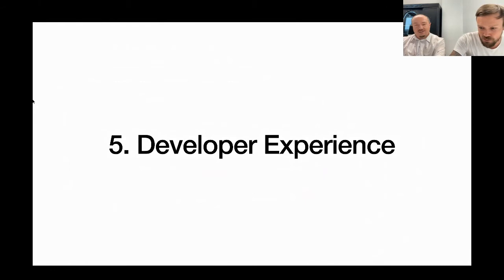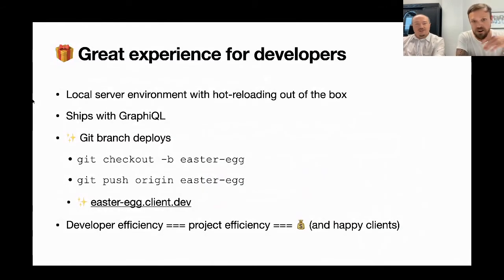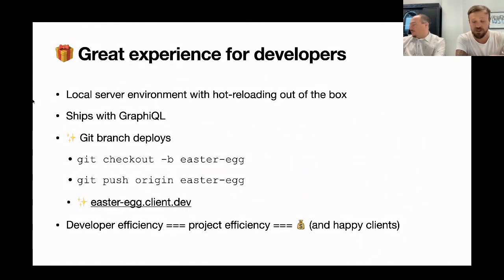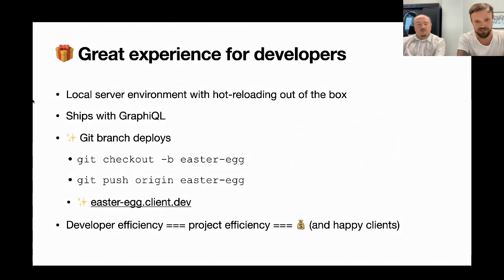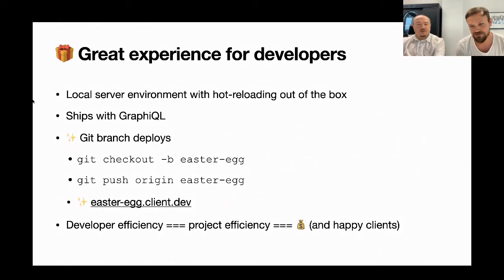Developer experience with Gatsby is great. Out of the box it gives you a local server environment with hot reloading — really simple, puts your website on port 8000. It ships with GraphQL, the interface that makes it easy to learn GraphQL and build your queries. Once you've built a query that works, you just copy it and put it into your code. Git branch deploys is also something we're looking at — you check out a feature branch, push it up to your repository, and CI can build a subdomain for that feature branch. Developer efficiency equals project efficiency equals happy clients.